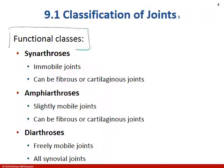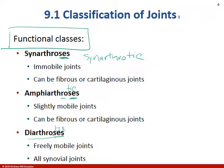Here are the functional classifications. The endings can change — you can see synarthrotic, amphiarthrotic, or diarthrotic. It doesn't always have to have the same ending; it means the same thing. Synarthroses joints are immovable. Amphiarthrotic joints are slightly movable — they have a little wiggle to them. And diarthroses are freely movable joints.